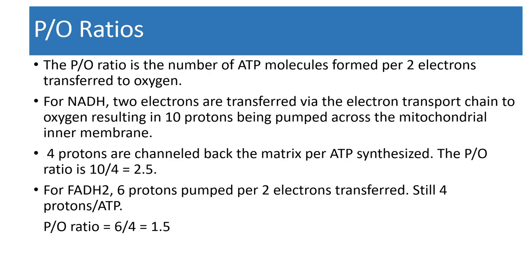The P:O ratio is the number of ATP molecules formed per two electrons transferred to oxygen. For NADH, two electrons are transferred through the electron transport chain to oxygen, pumping 10 protons across the inner mitochondrial membrane. Since 4 protons are required per ATP, 10 ÷ 4 = 2.5 molecules of ATP per NADH. For FADH2, which enters at Complex II, only 6 protons are pumped, so 6 ÷ 4 = 1.5 molecules of ATP per FADH2.